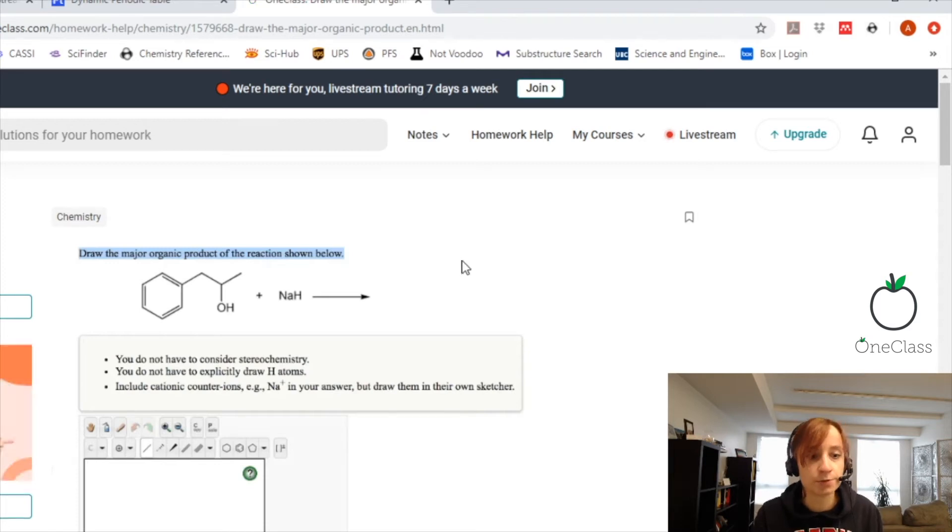Okay, so we are going to draw the major organic product of the reaction shown below. We have an alcohol and this is sodium hydride.